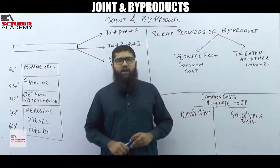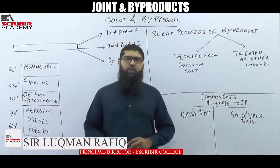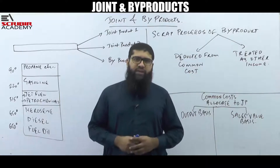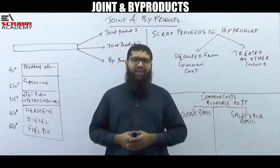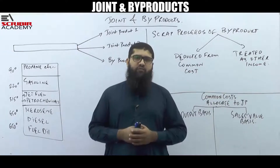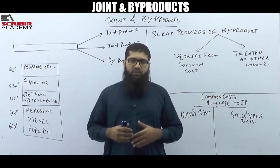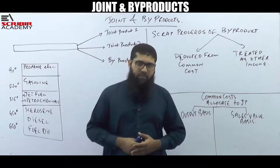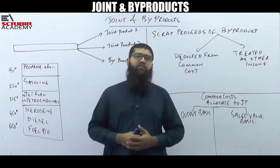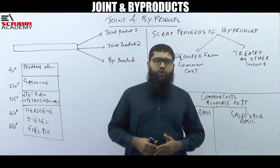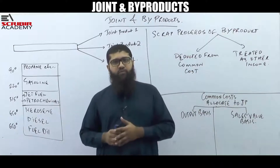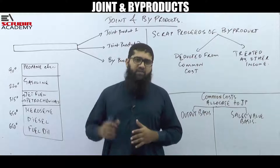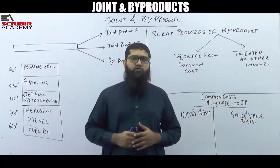Hi everyone. The topic we are going to be discussing today is joint and byproduct costing. All those who are studying costing or applying it in real life come across this problem: whenever you look at any manufacturing process, multiple products are sometimes produced. If multiple products are produced through that manufacturing process, how exactly should we be accounting for those products? We are going to discuss this under the concept of joint and byproduct.